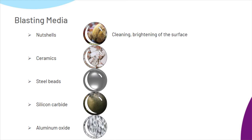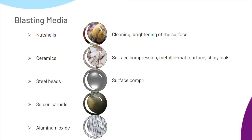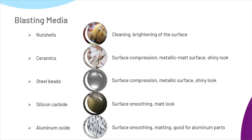Nutshells are mainly used for cleaning purposes. They are not very abrasive but remove semi-melted or sticking particles, and parts appear brighter. Ceramics compress the surface and can therefore reduce the roughness; the result is a metallic matte surface finish. Steel beads compress the surface as well and reduce the roughness; parts will have a metallic shiny look. Silicon carbide is suitable for smoothing the surface, and parts appear matte.